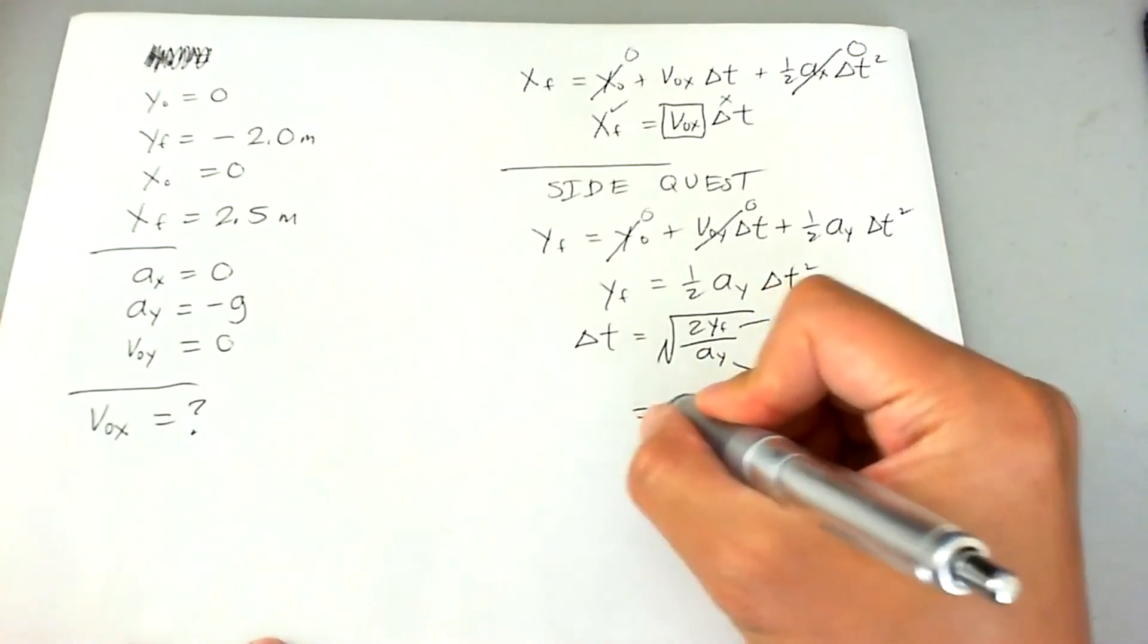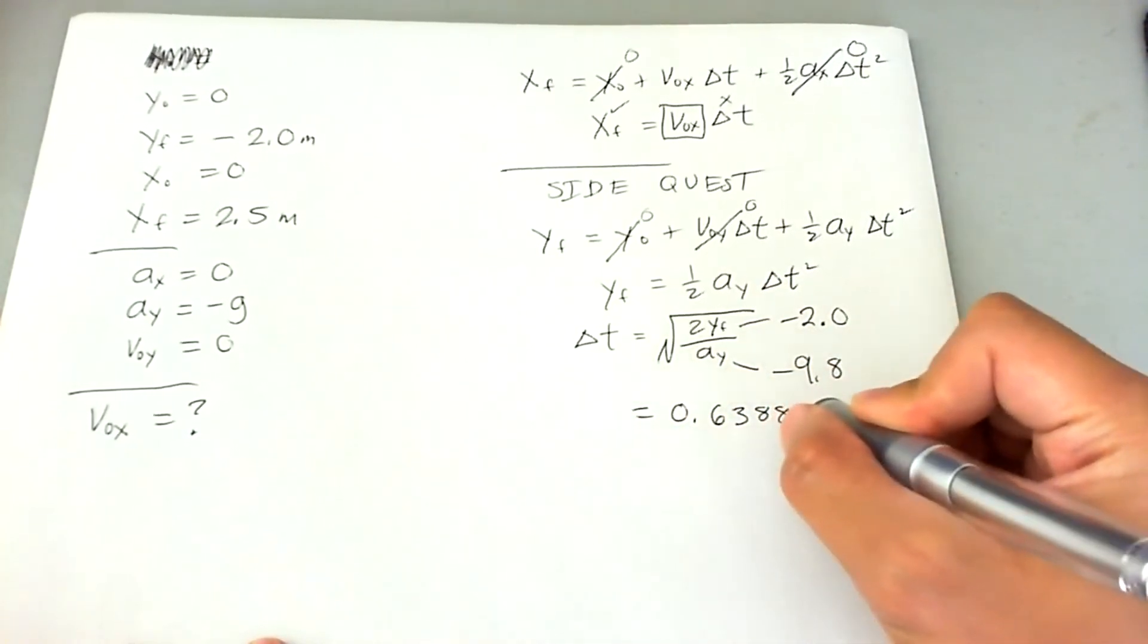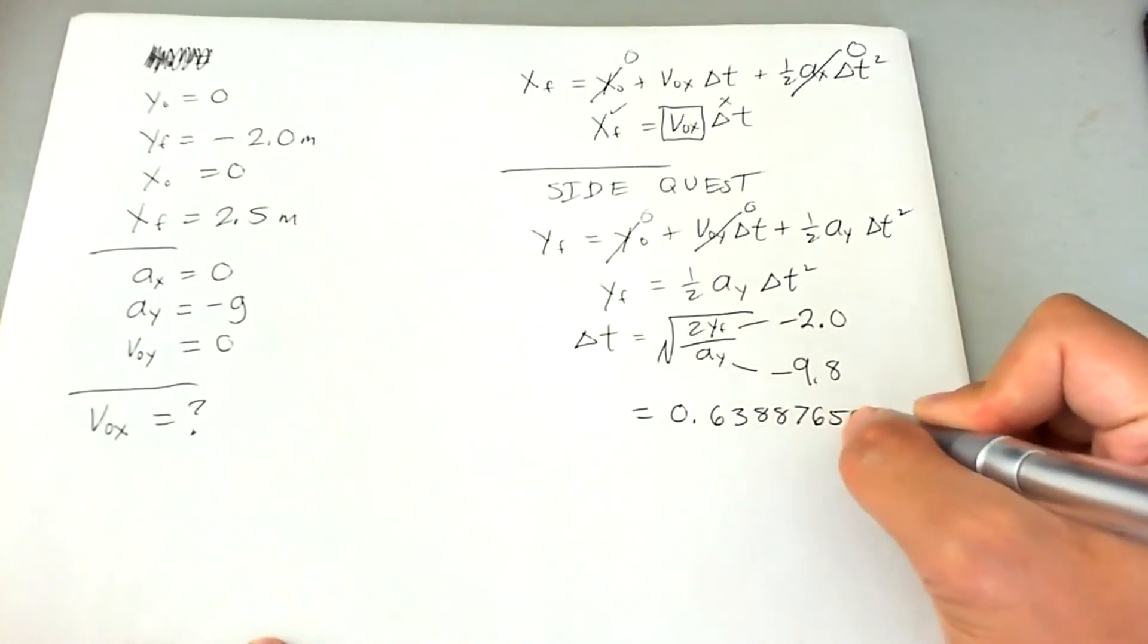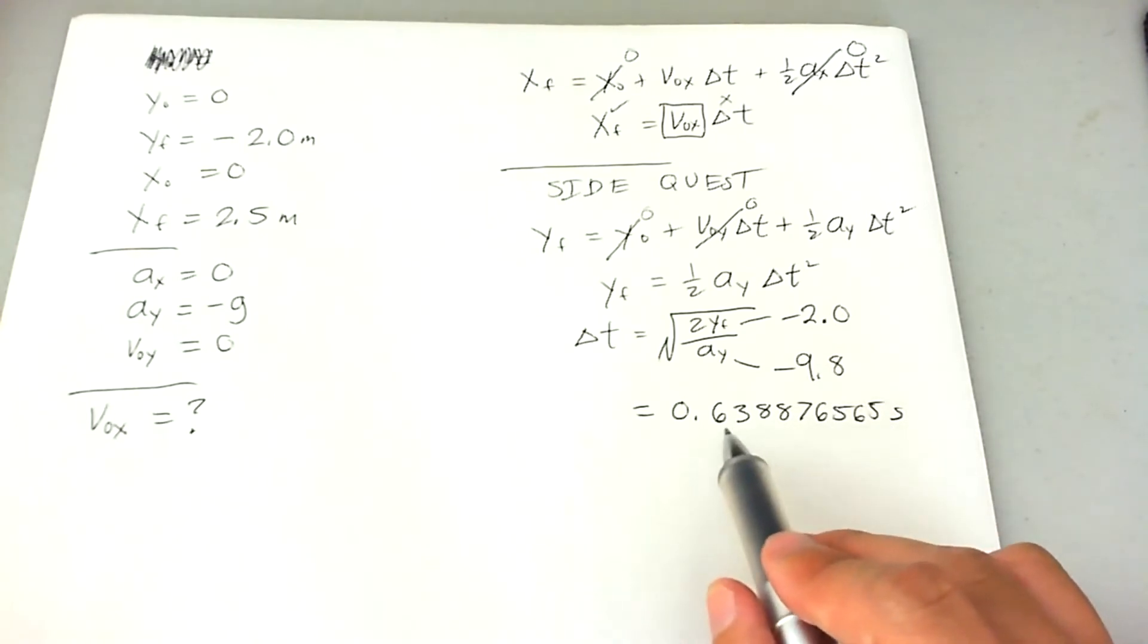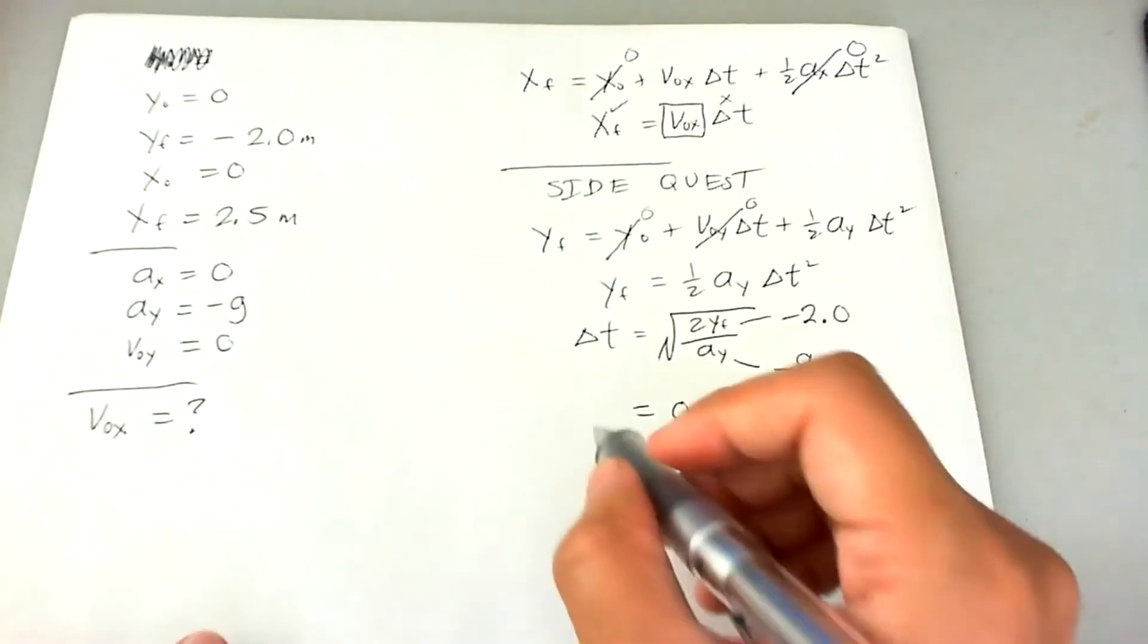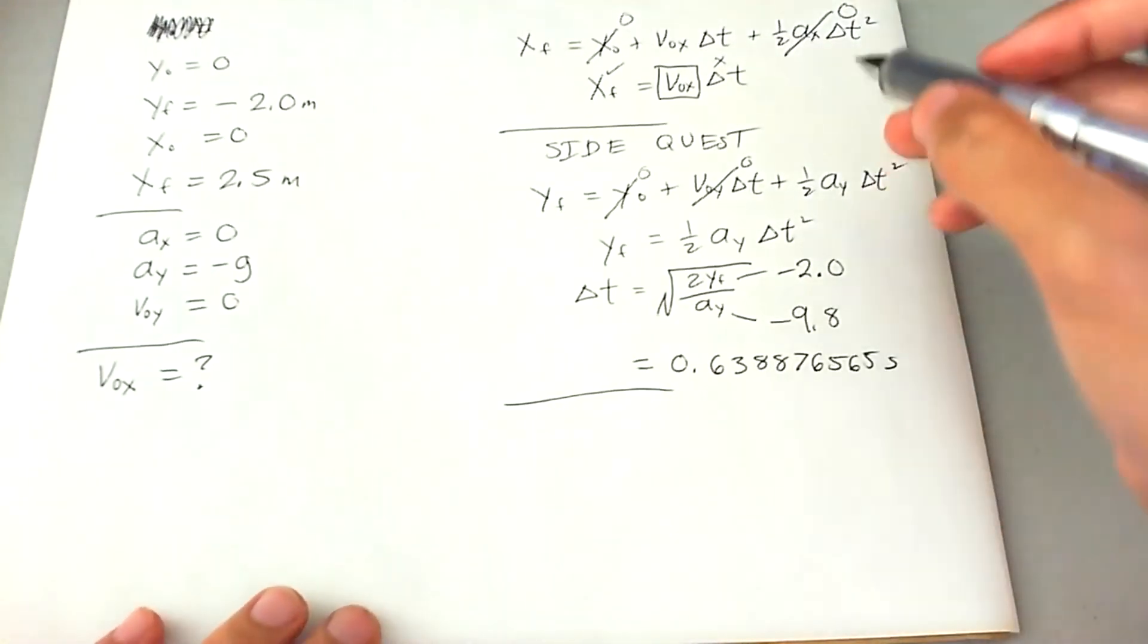And this comes out to be 0.63876565 seconds. I couldn't find a good way to reduce this down to a smaller number or a less decimal place number. So I'm going to keep it like that for now and then we'll just reduce it later. Okay, side quest is over. Let's go back to our main objective.